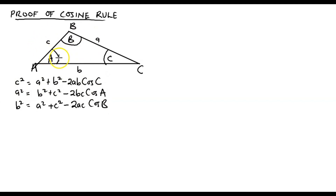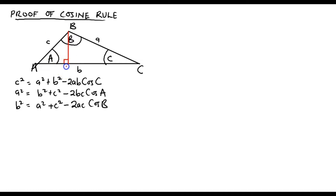Now, what then is the proof? To prove the cosine rule, I can pick any of the sides, but let's start with one of them. I will introduce a perpendicular height from B to meet the side AC. The perpendicular height meets AC at point N. This perpendicular height has partitioned the triangle into two halves with a common height h.